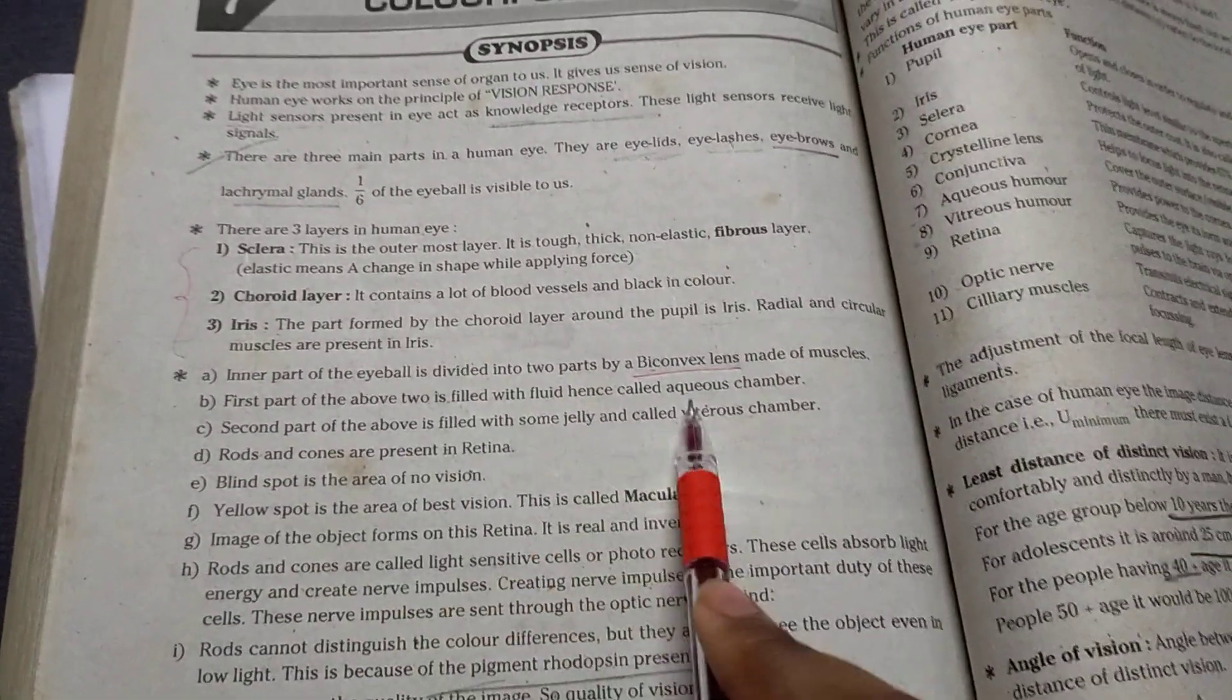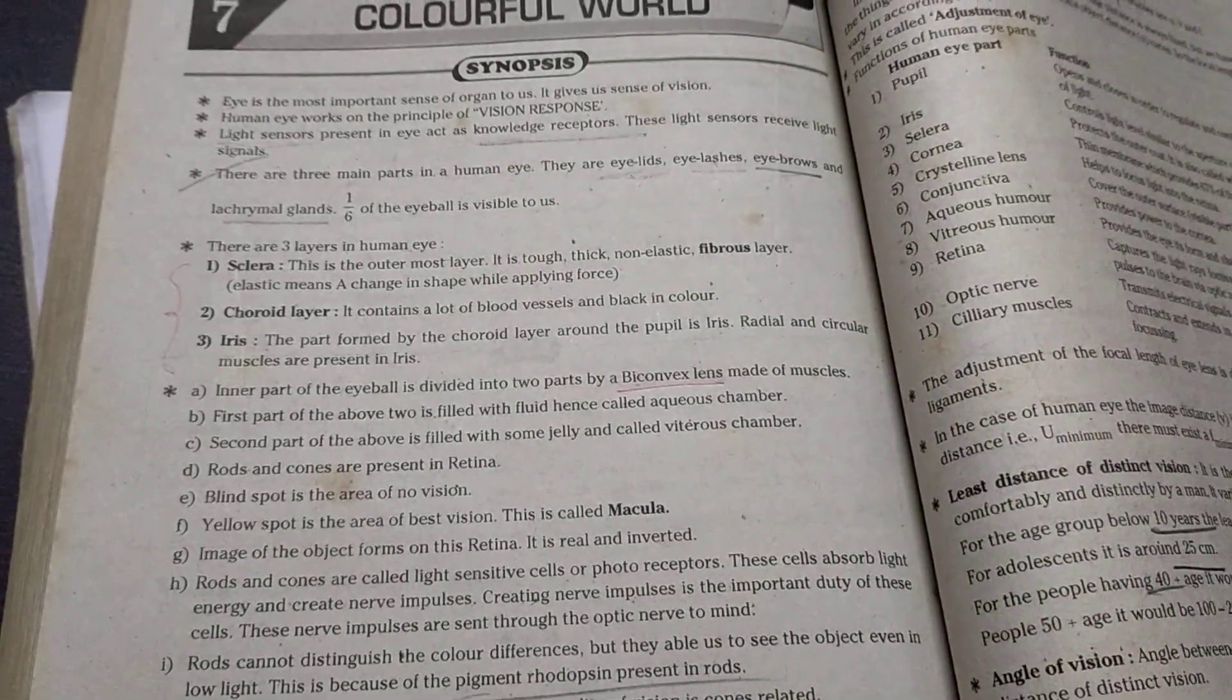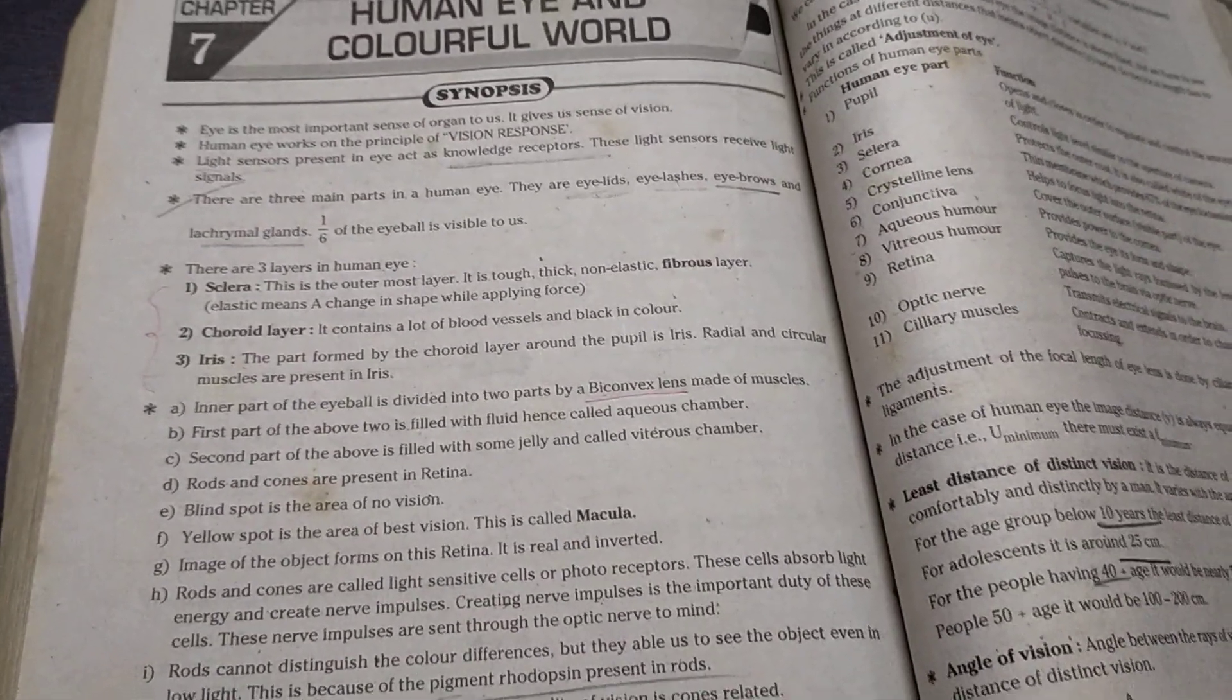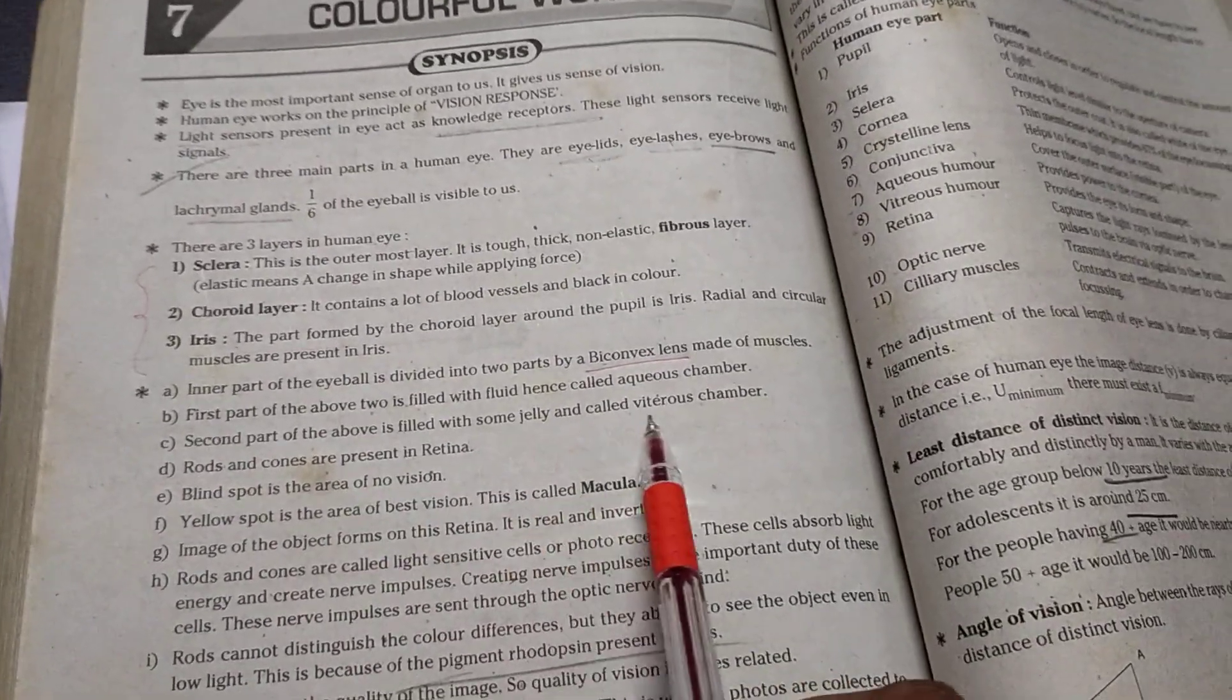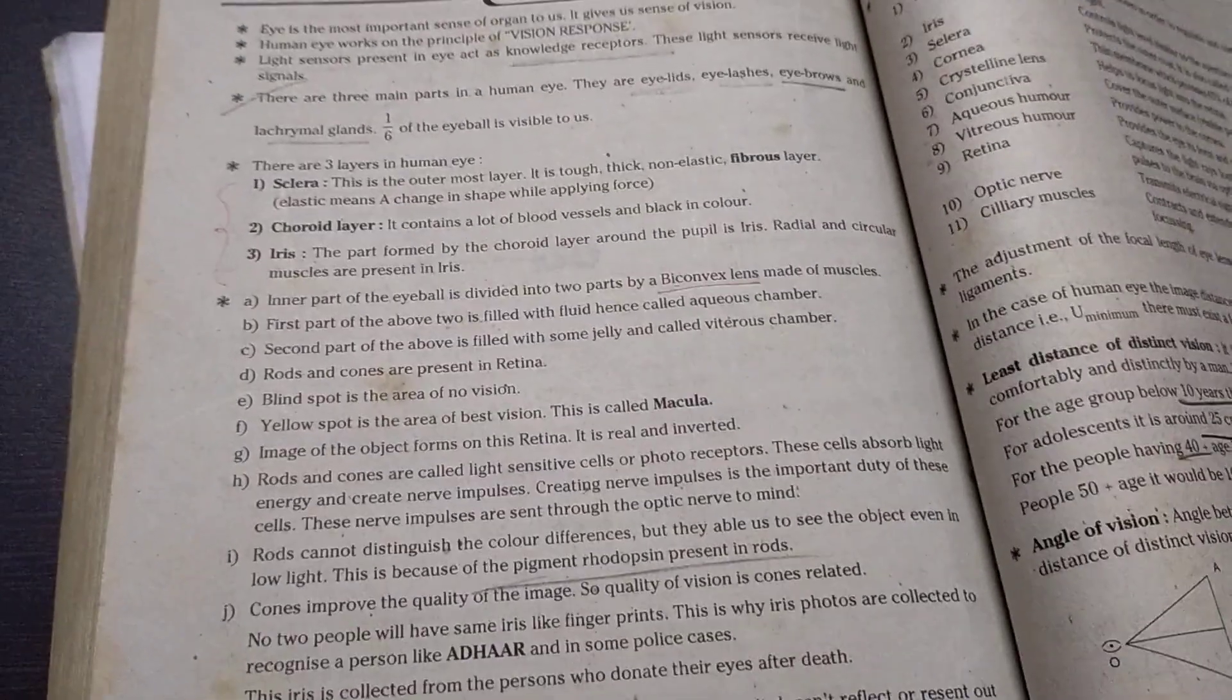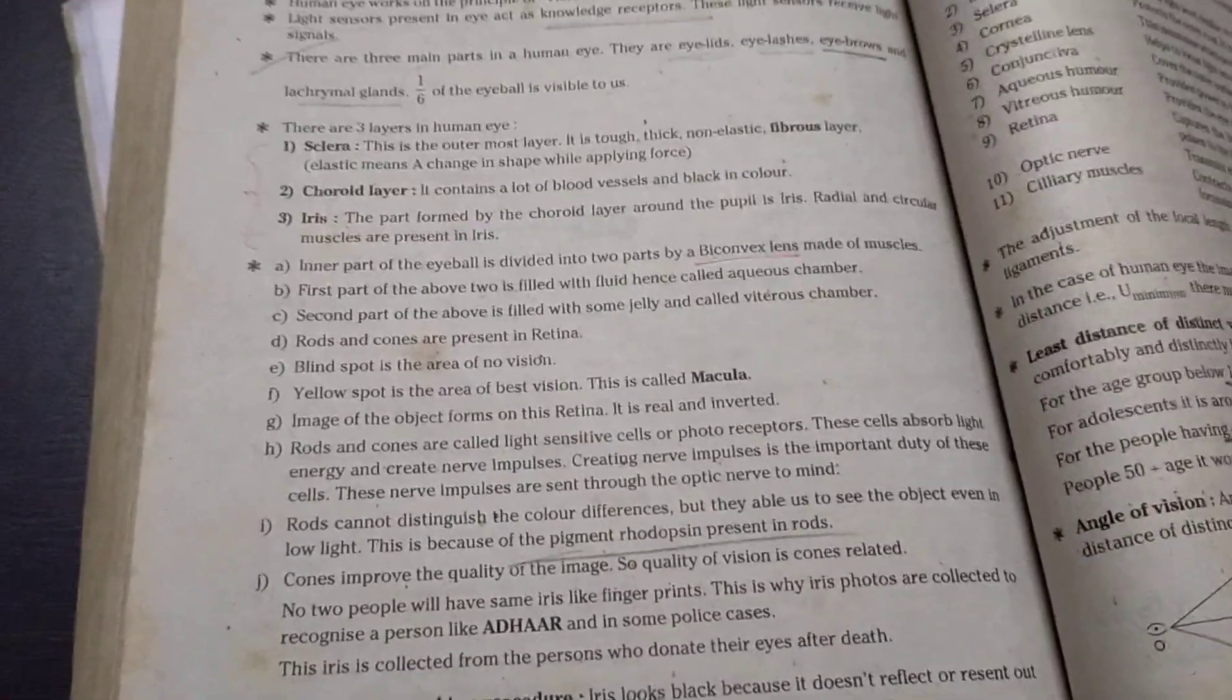First part of the above two is filled with fluid hence called aqueous chamber. Aqueous chamber helps to change the eyelid to see any object in any direction. Second part of the above two is filled with some jelly called the vitreous chamber. So it is also just present in eye. It's like God's wonder, God's great gift.